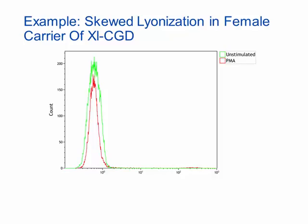This is an example of skewed lyonization in a female carrier of X-linked CGD — an elderly woman in her seventh decade of life who presented with an episode of Burkholderia pneumonia. She had a known history as a carrier of X-linked CGD with a male offspring who was clinically symptomatic. This patient shows age-related skewing of lyonization with 100% skewing and completely absent neutrophil respiratory burst, as shown by the superimposition of the green and red histograms.